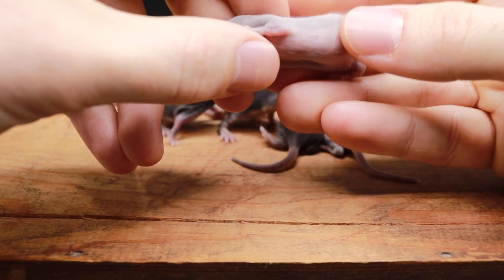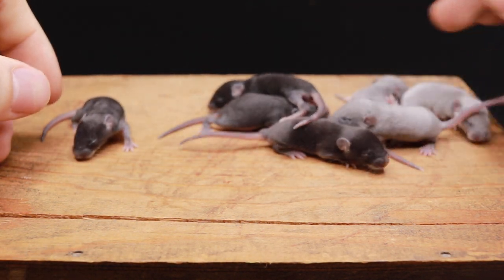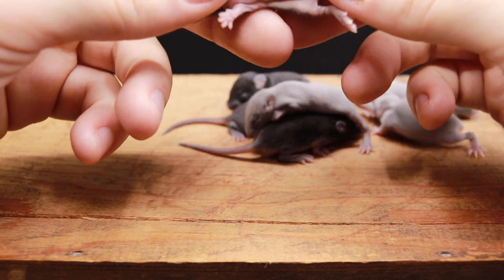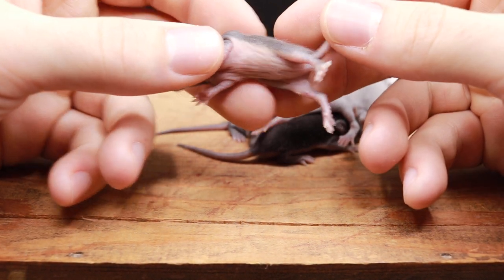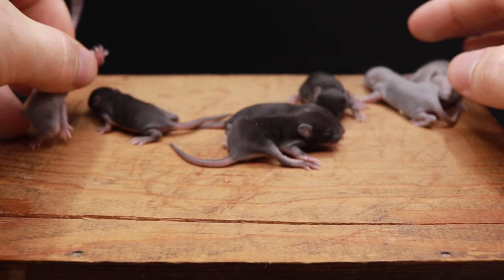Because when the tan gene is combined with certain dilution genes, the belly will be white. So I guess their temperament's not too bad. But when I've handled them before, they were just absolutely crazy.